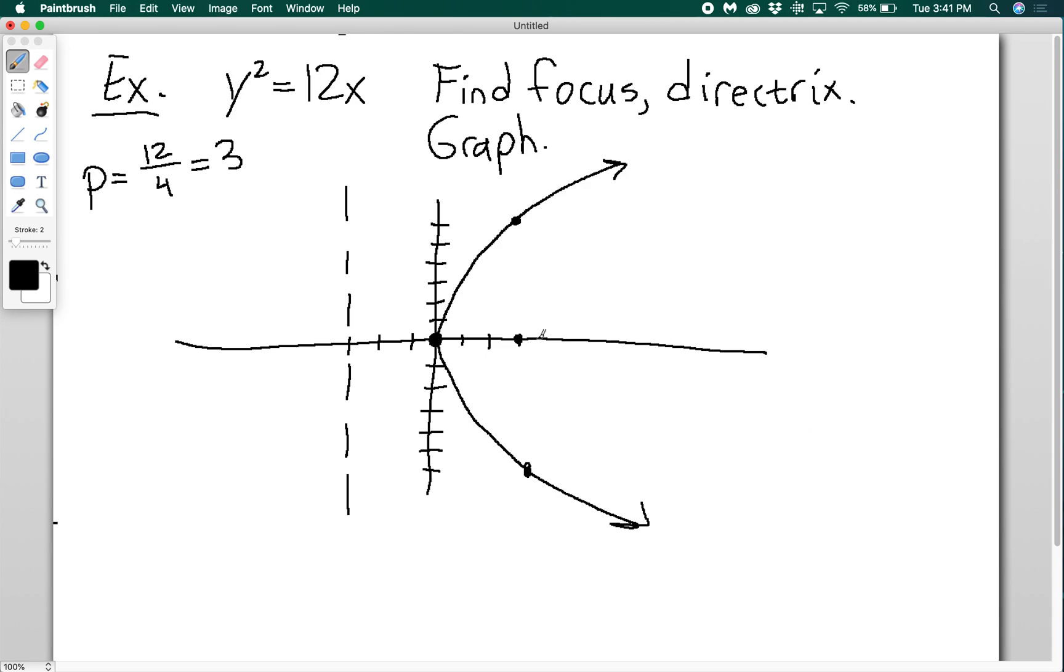And that's my parabola. And I'm going to make sure, as always, you label stuff. So this line is x equals negative 3. This is my focus. And this point is 3, 0. And then I know these points are 3, 6 and 3, negative 6. So that's one parabola. Let's do another one.